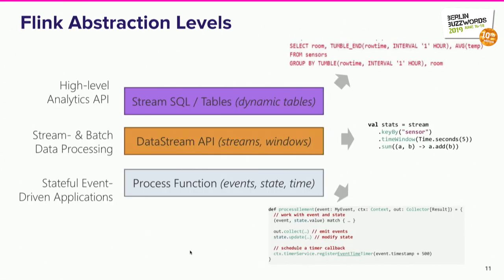The Flink abstraction levels: you can write jobs using SQL, and a lot of effort has gone into SQL lately. A level below that is writing Java DataStream or DataSet applications, which requires programming. And for even more flexibility — access to state, time, and other details — Flink provides those lower abstraction levels too. Depending on the use case, you can go down in abstraction to gain more flexibility, at the cost of more work and a higher skillset.